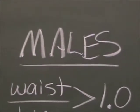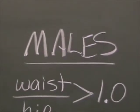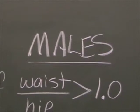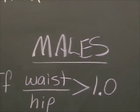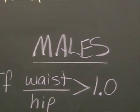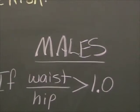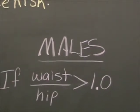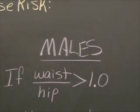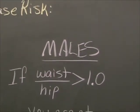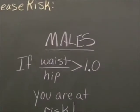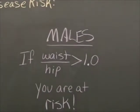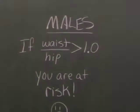If you're a male, you need to be very, very careful that this ratio — waist compared to hips — does not ever get greater than 1.0. If it does, you are in danger of heart disease.